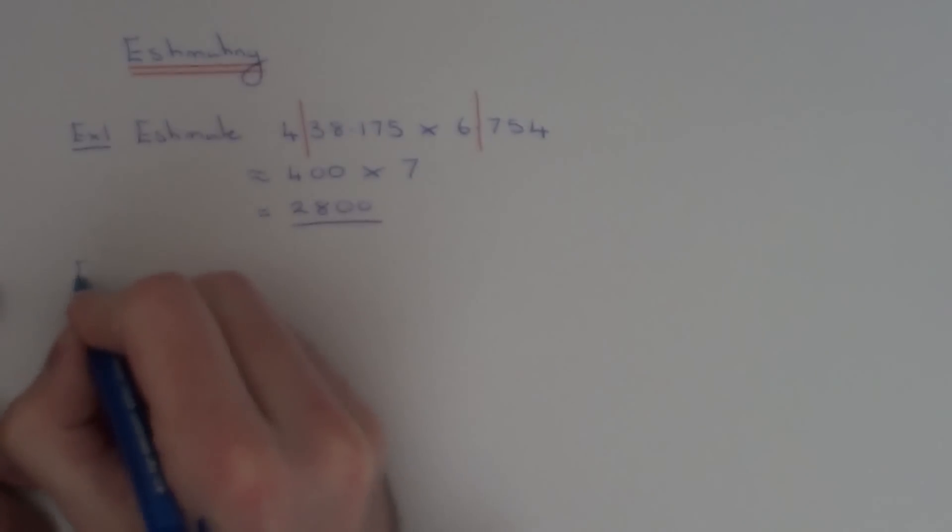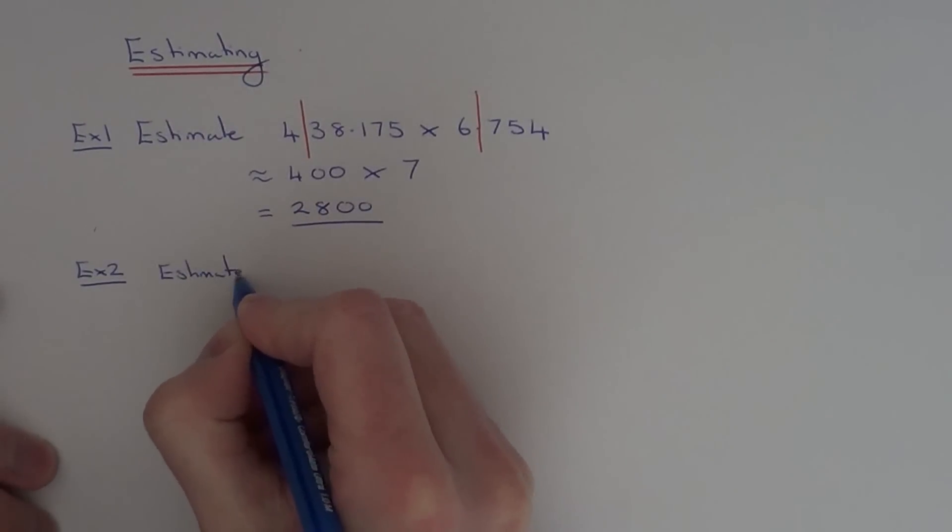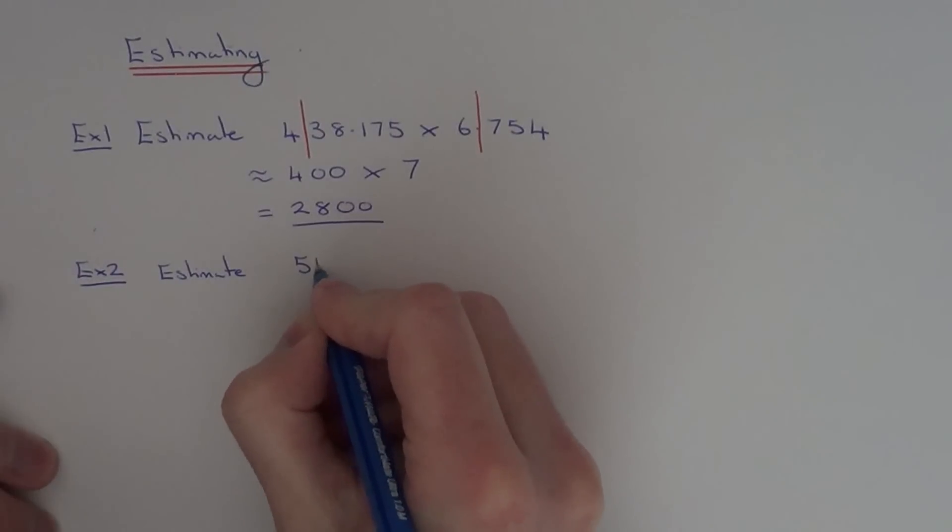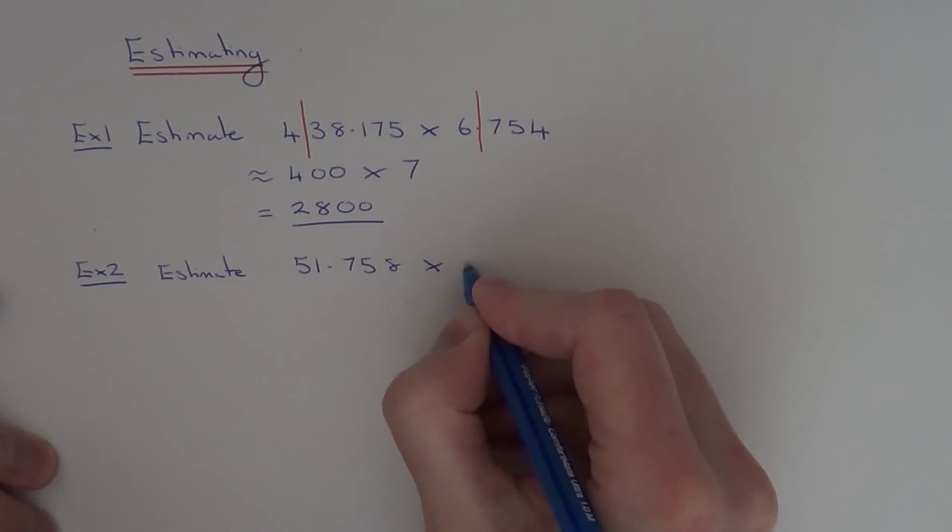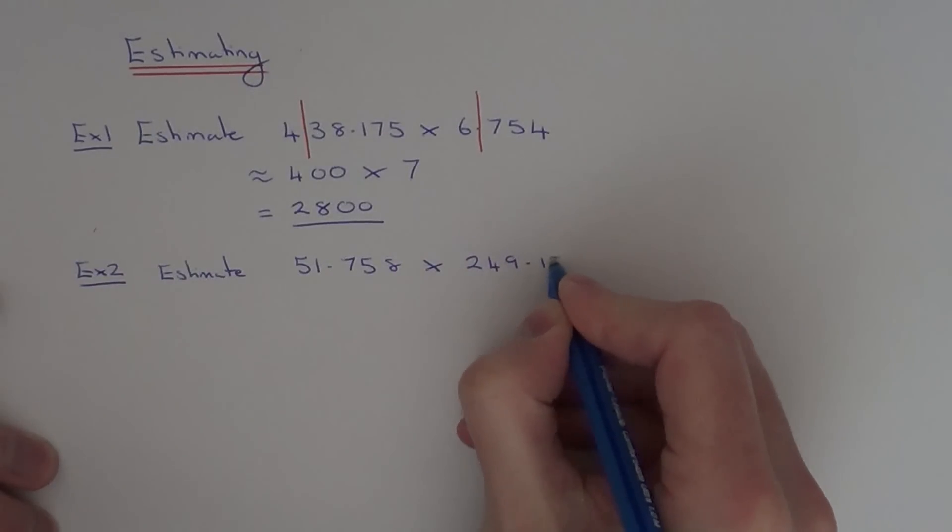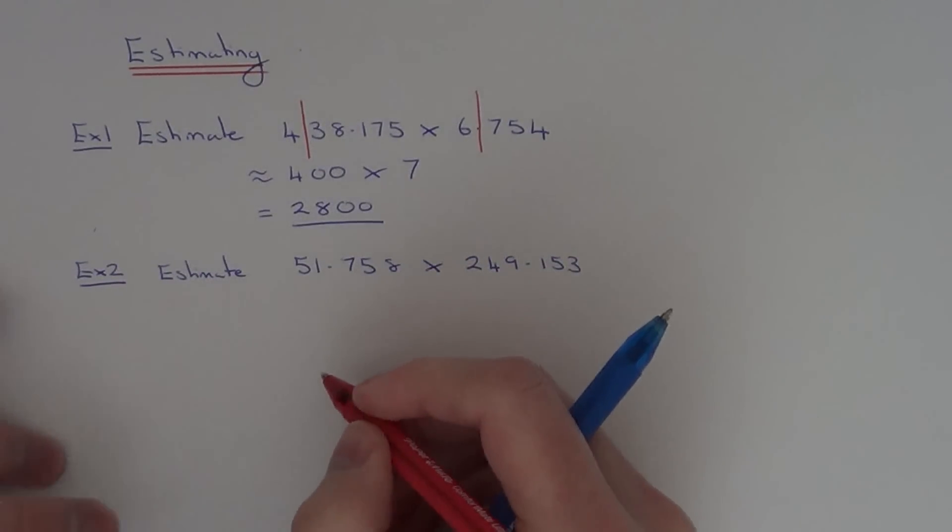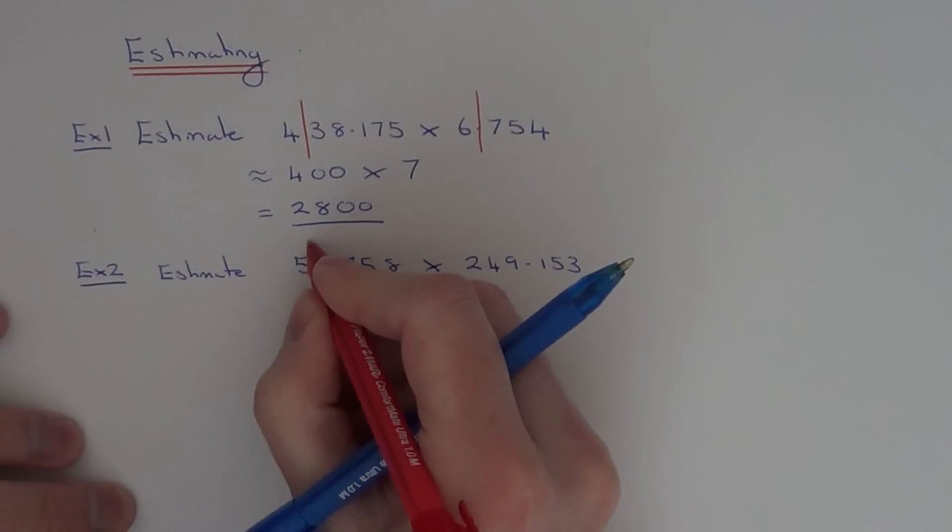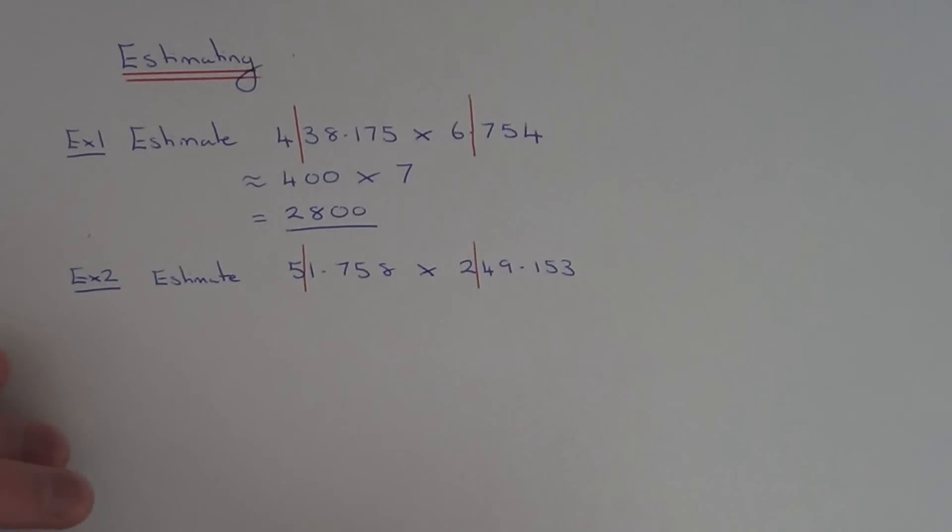So let's do another one, example two. So we're going to estimate 51.758 multiplied by 249.153. So again, just round the numbers off to one significant figure. So cut it off there and cut it off there on that one.